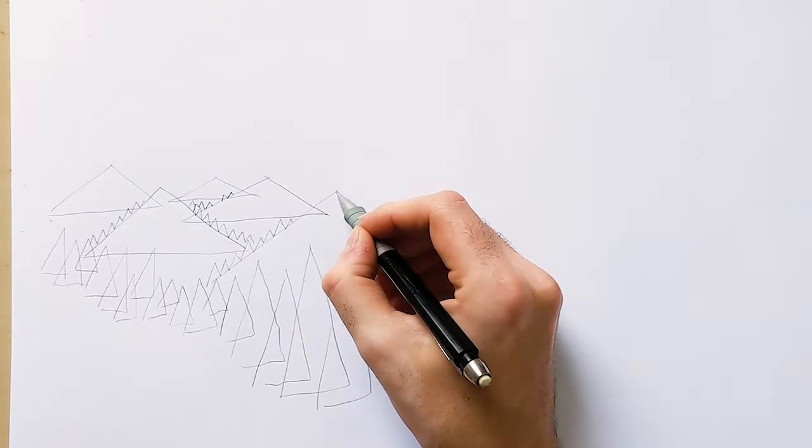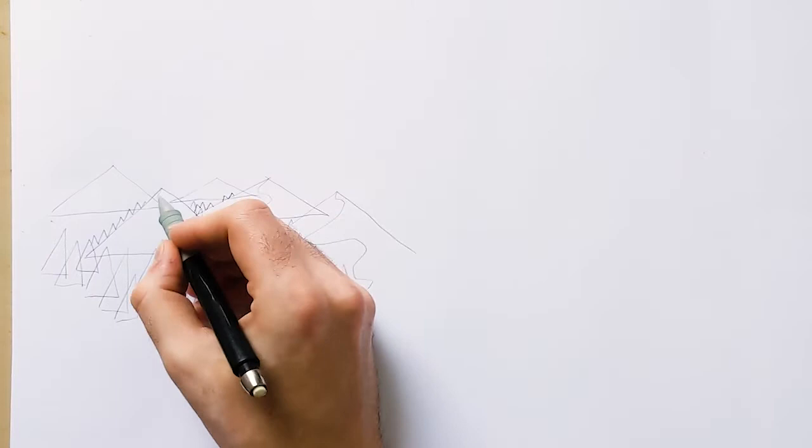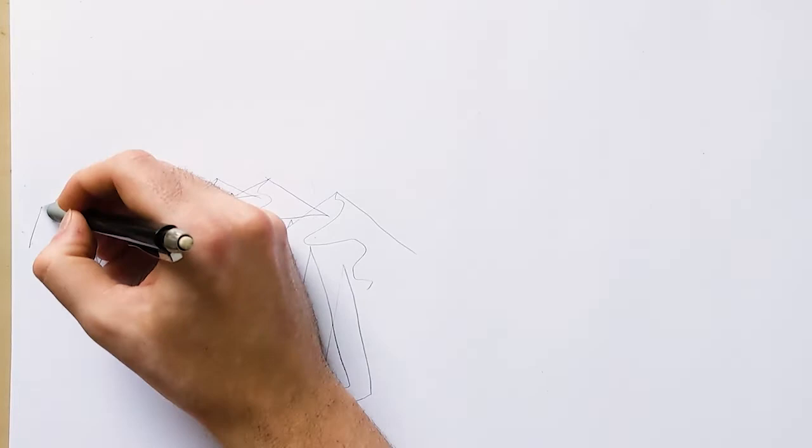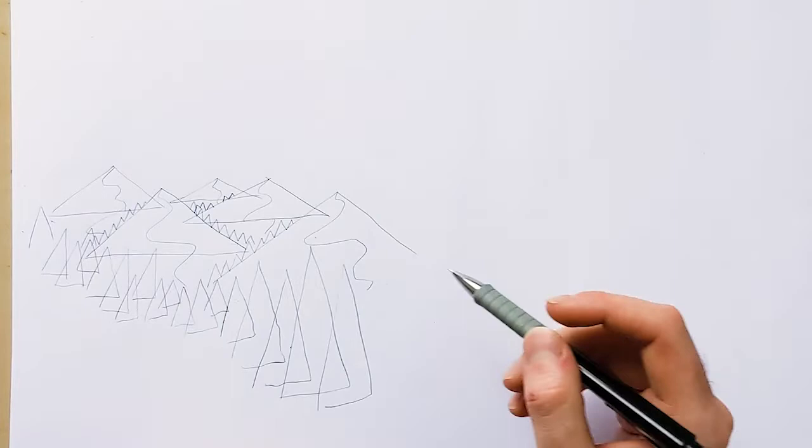Now this is the fun bit where you want to do a big swooshy line from the points of your big triangles. And so the great thing about this is that you can just use the pencil to sketch things in lightly and build it all up together. Because next we're going to add some things into the sky.